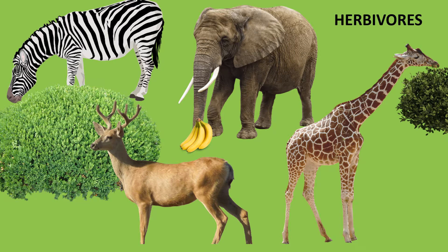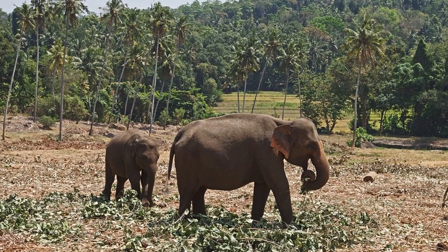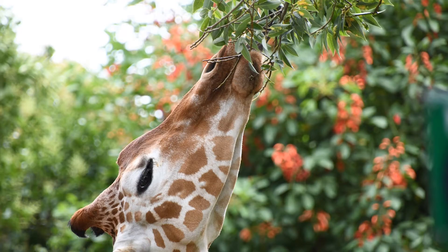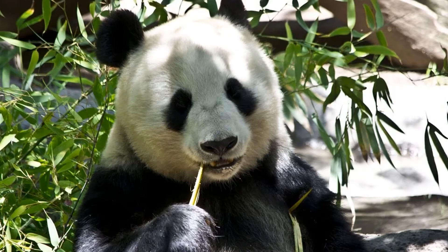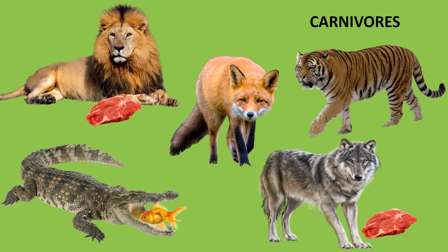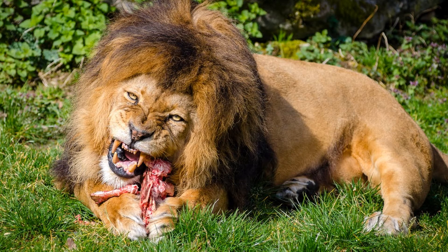Animals that eat plants are called herbivores. For example: elephant, giraffe, deer, and panda. Some wild animals eat only the flesh of other animals; they are called carnivores. For example: lion.